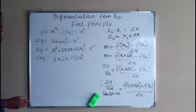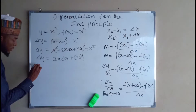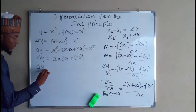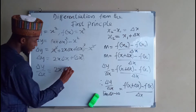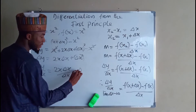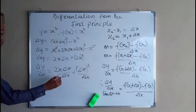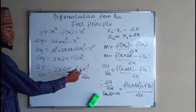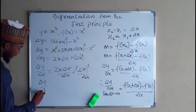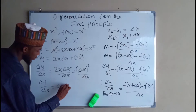Now, we need to take dy with respect to x. So we have dy over dx equals 2x dx divided by dx, plus dx. This cancels with this, and this divided by this is just equal to dx. So dy over dx equals 2x plus dx.